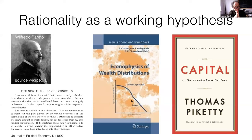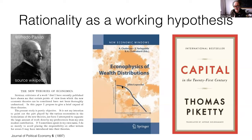Wealth is very unequally distributed in society. A small fraction of people own a large fraction of total wealth. If you look at the distribution of wealth across individuals, you find what is called a Pareto distribution — essentially a power law distribution. It is a very broad distribution, and if you plot it on a log-log scale you find a straight line. This finding was first derived by Wilfredo Pareto.